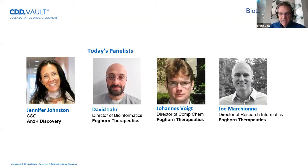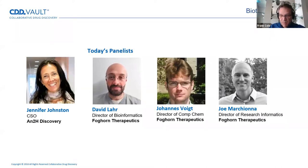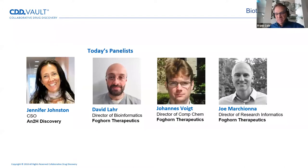Johannes Voigt is the director of computational chemistry at Foghorn, where he's responsible for ligand and structure-based drug design, cheminformatics, and decision-enabling tools. Joe Marciana leads the research informatics efforts at Foghorn, responsible for strategic implementation and management of research informatics.